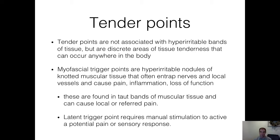A latent trigger point requires manual stimulation to activate a potential pain or sensory response. For example, you push on the wrist extensor at the elbow — that's local pain. But if you push on it and get pain into the hand, that could be a referred pain pattern. You see this a lot with the neck muscles.